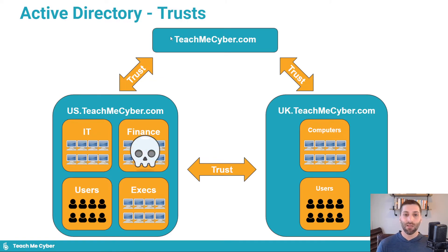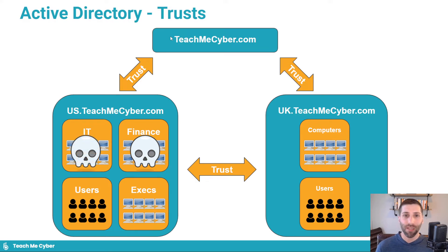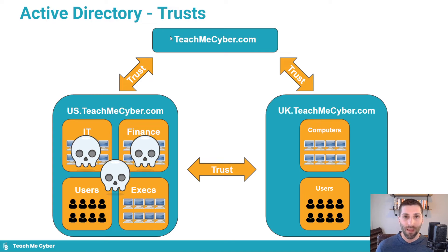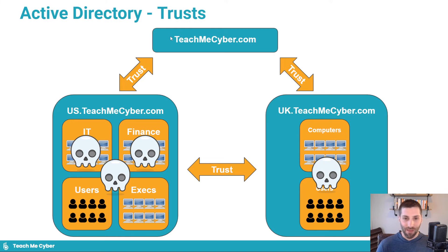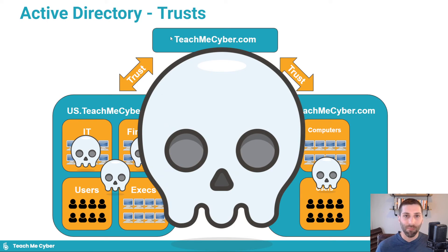The reason this is important is because let's say a threat actor gets credentials and access to a system in the finance department. From there, they can break in, start moving laterally, and do a lot of different things to try to get additional credentials. Eventually, they're probably going to end up on an IT system where they'll get a domain administrator credential. When they get the domain administrator credentials for that environment, they then have access to really anything else in that environment — all the user accounts, all the users' systems, and they can really do whatever they want. Because there's a trust relationship between the US environment and the UK environment, the attackers can just log into those systems in the UK because they already have that privileged account. That's essentially the complete compromise of the entire environment.